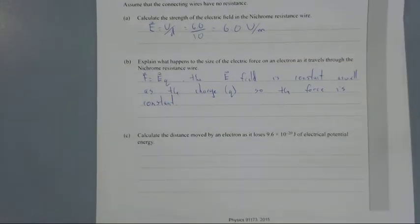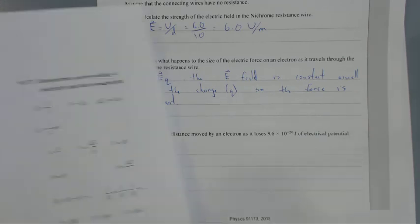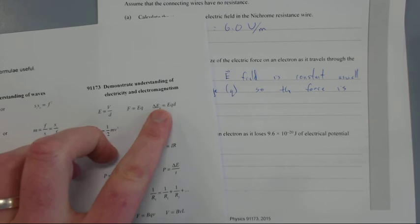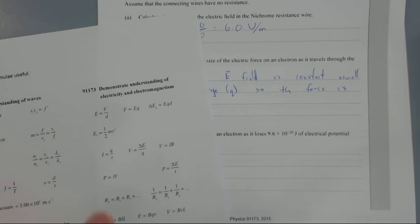Part C: Calculate the distance moved by an electron if it loses 9.6 times 10 to the negative 20 joules of potential energy. We're looking for the electric potential formula, which is change in Ep equals the electric field times the charge times the distance.